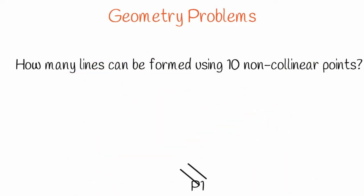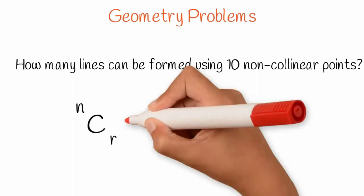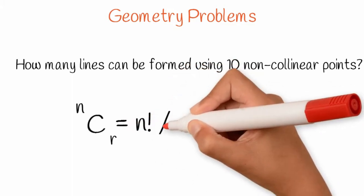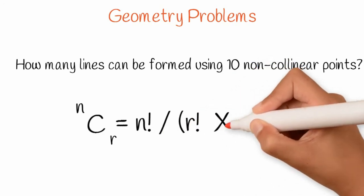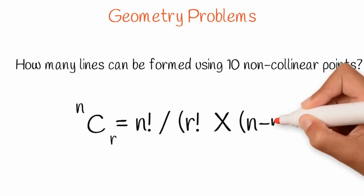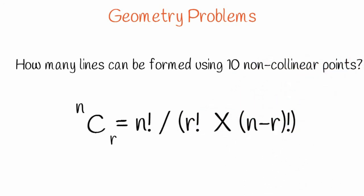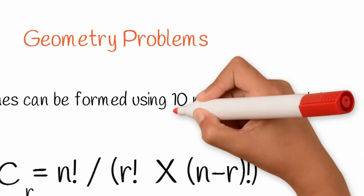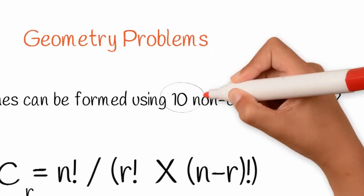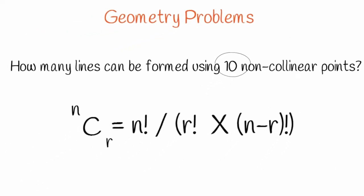Recall from previous session, the generic formula for finding number of combinations is nCr equals n factorial over r factorial times (n minus r) factorial. In this problem, available points are 10 and basically you have to select two points to form a line.